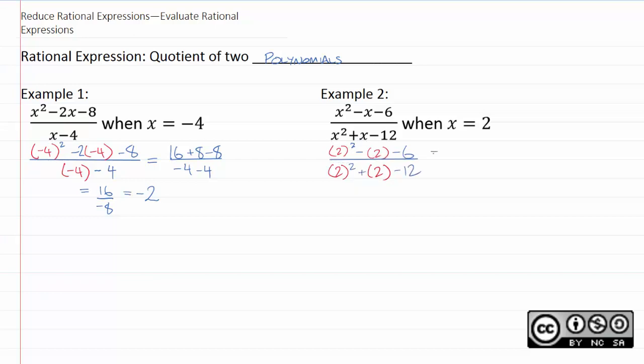And then to continue, two squared is four minus two minus six. Two squared is four plus two minus 12. Again, just some basic arithmetic here. The top works out to negative four. The bottom works out to negative six.